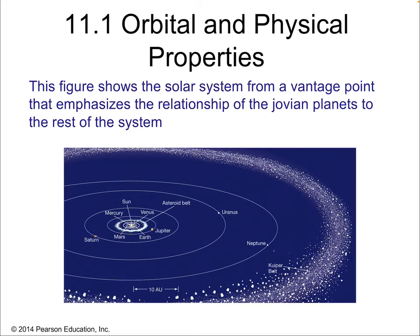Here we have Jupiter's orbit — definitely further from the sun than the much smaller orbits where all four terrestrial planets are found, and also outside of the asteroid belt. We skipped over the asteroid belt; we'll come back to that later. It does exist between Jupiter and the orbit of Mars. The solar system is pretty planar. Uranus and Neptune have orbits that are dramatically further, making Jupiter look downright close to the sun. At the very edge we have the Kuiper belt. We've really begun to enter the outer solar system as we pass outside of the asteroid belt.